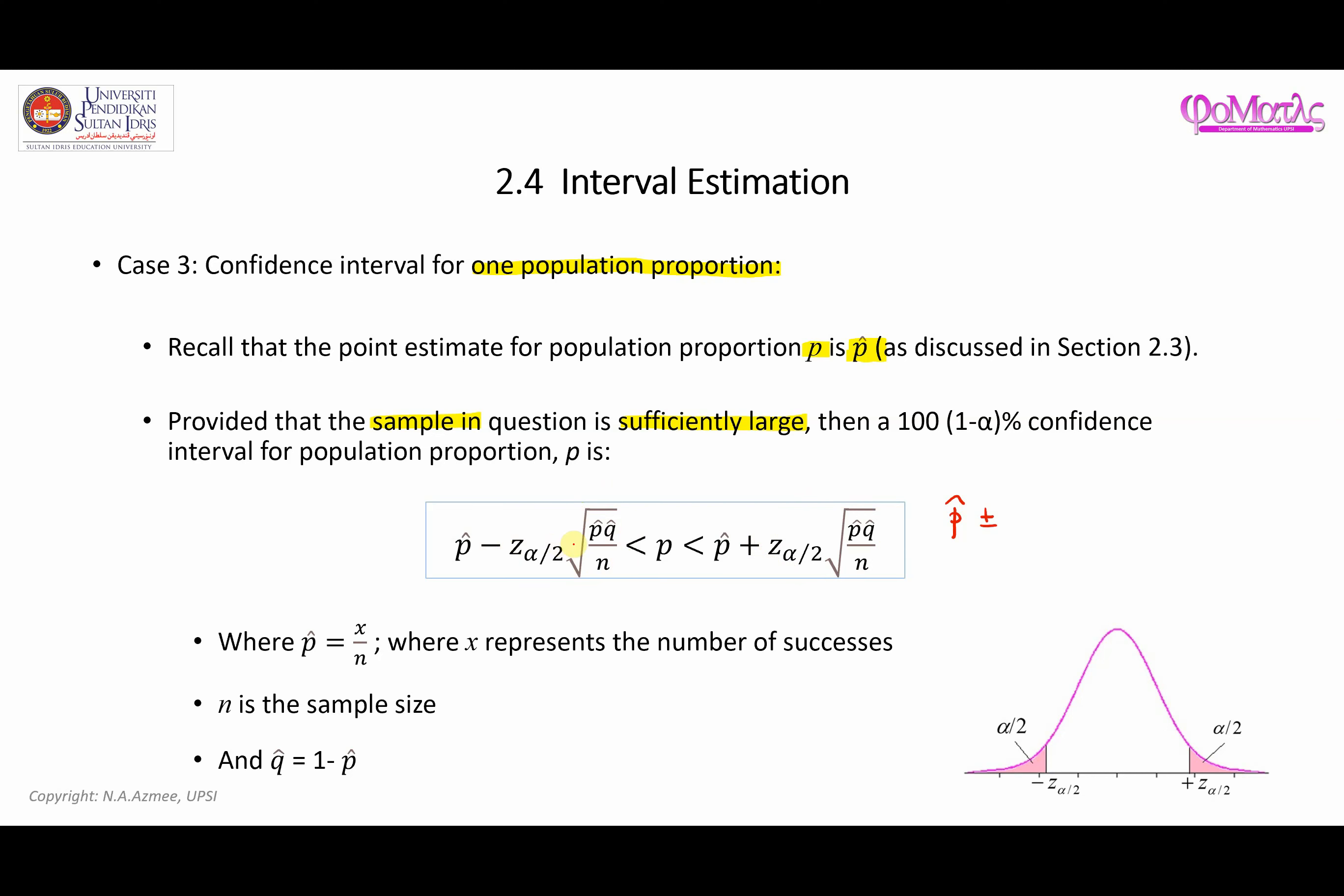We can write it in a simple form. We use the plus minus sign and we write down Z alpha over 2. This is the Z quantile which can be obtained from the standard normal distribution table. And this one is the standard error of the estimate which is P hat Q hat over N.